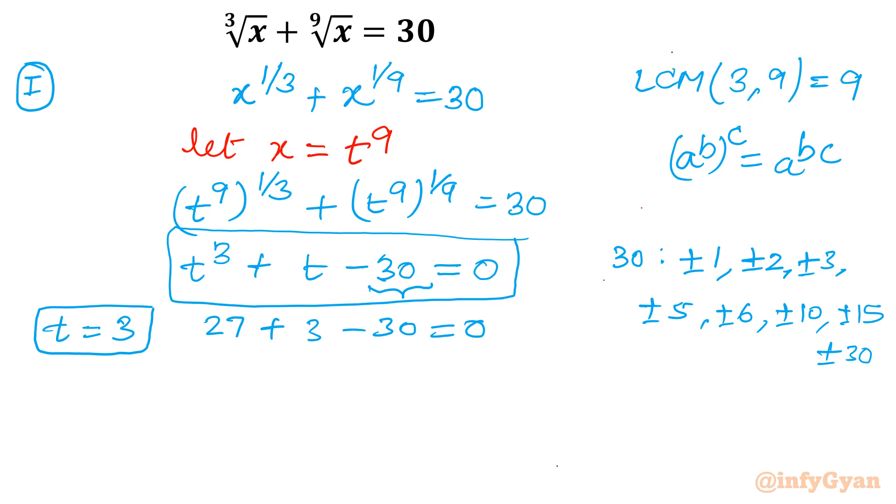Now I will apply synthetic division. How it will work? I will write here t equal to 3. Then I will write the coefficient of the cubic polynomial: t cube coefficient is 1, t square term is missing so 0, t coefficient is 1, and constant is minus 30. Then I will take leading coefficient as it is. Now take the product: 3 times 1 is 3, 3 times 3 is 9, 10 times 3 is 30, 0.